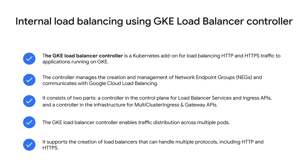Let's now see what a GKE load balancer controller is and how you can use one for internal load balancing. GKE load balancer is a Kubernetes add-on that uses Google Cloud load balancing to distribute HTTP and HTTPS traffic across pods. They are scalable, highly available, easy-to-use add-ons that integrate with Google Cloud load balancing. They can be configured via YAML. The controller is composed of two parts: the first part runs in control plane nodes and watches load balancer services and ingress API, and the second part runs in the infrastructure and watches multi-cluster ingress and gateway APIs. To use this controller, enable the add-on in your GKE cluster and then create an ingress resource to define traffic routing. The controller will then create and manage load balancer resources.